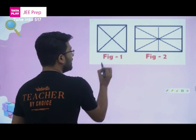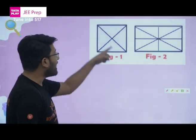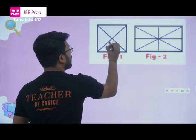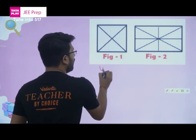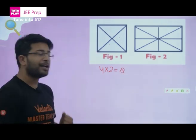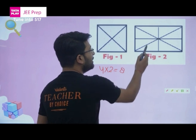figure one. In figure one, we can see that there are two diagonals, yes, and four blocks, right? So simple: four into two is equal to eight. Eight is the number of different triangles in this one.